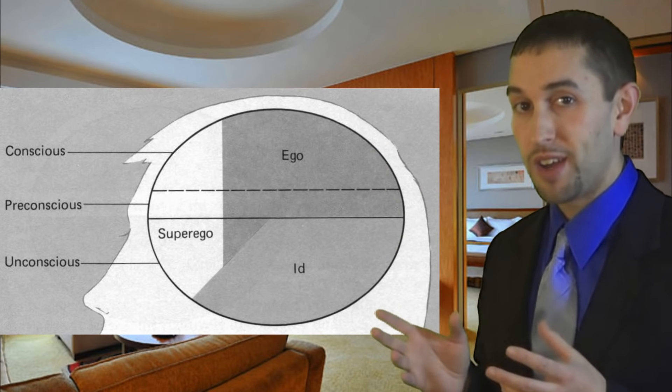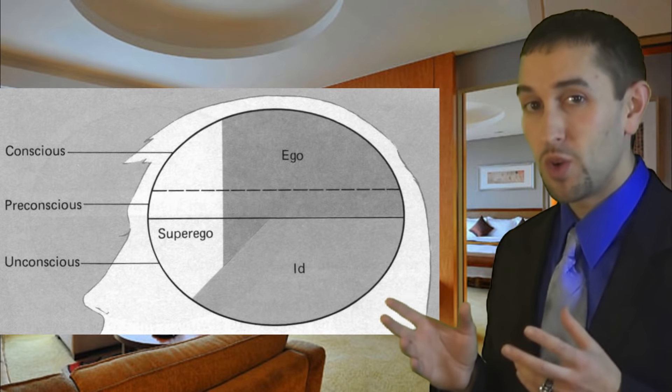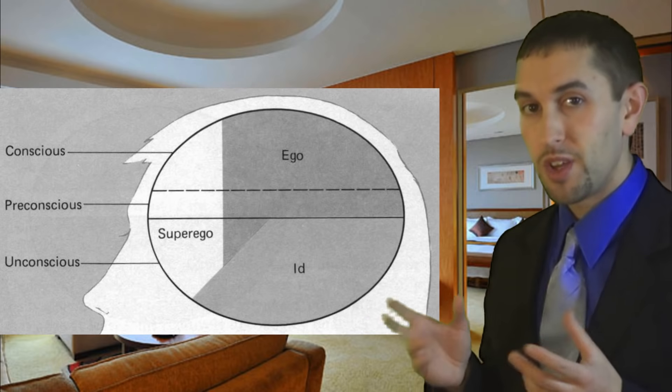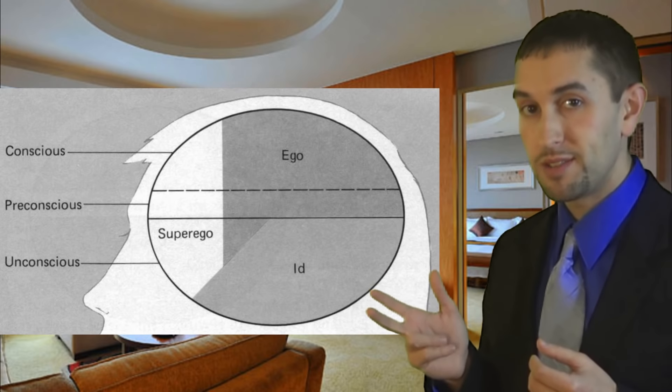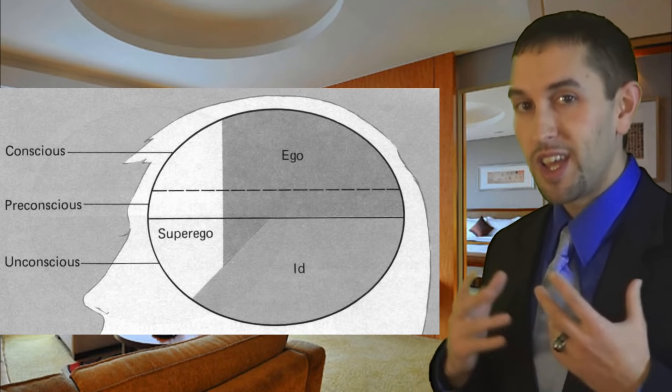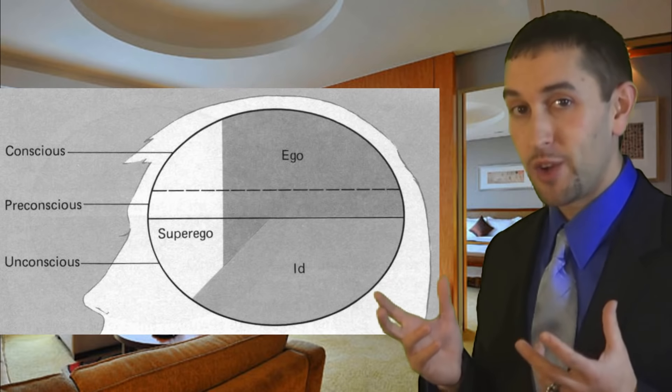Beginning at around the age of five, a portion of the ego is modified, and it becomes the superego, the third section of the mind. The superego is our conscience. It contributes our sense of right and wrong.